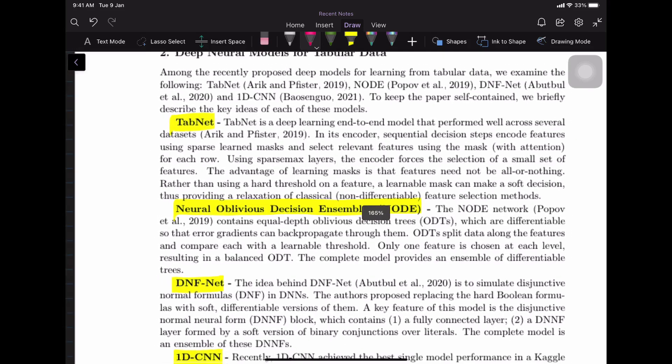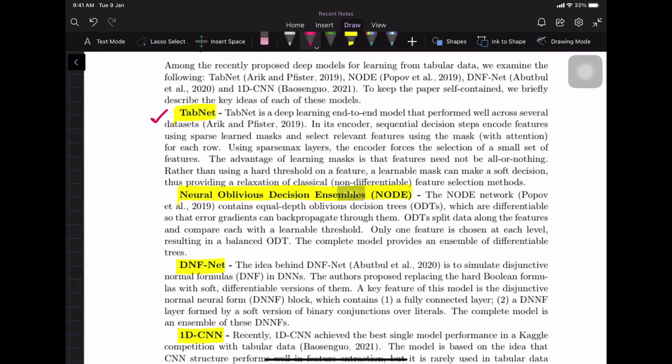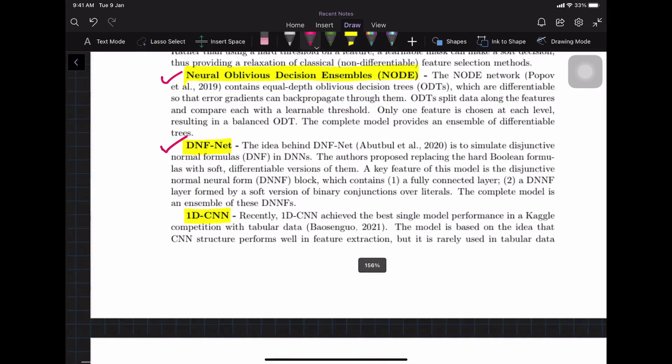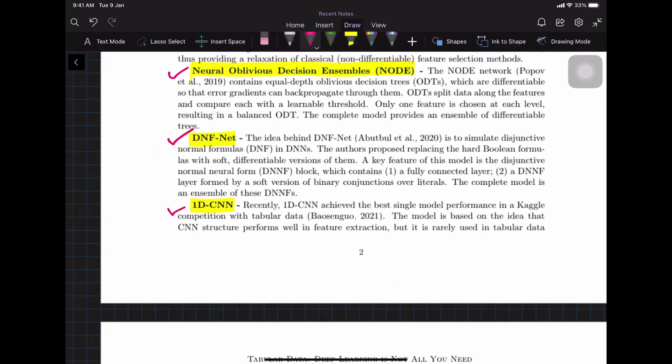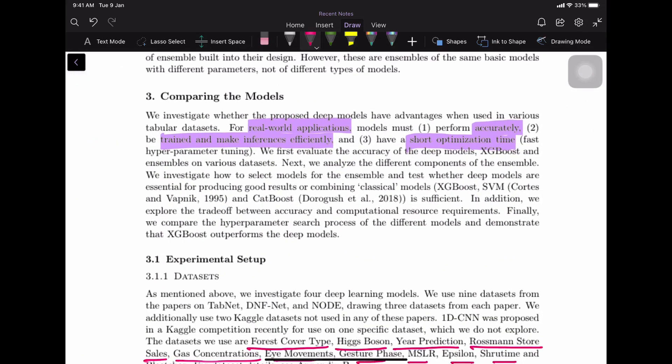So the models that they considered in this paper are TabNet, which is a very popular framework, a library for tabular data based on PyTorch, and they have also considered Neural Oblivious Decision Ensembles which is NODE, DNFNet, and then also a one-dimensional CNN. You might actually see 1D CNN does a lot better than other models. They have also considered ensemble of all the models.